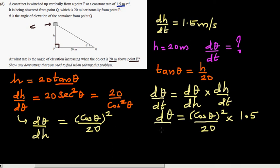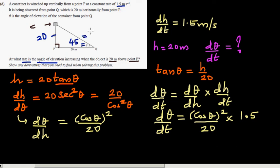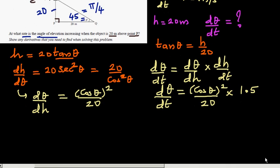The question asks: at what rate is the angle of elevation increasing when the object is 20 meters above the ground? If h is 20 and the horizontal distance is also 20, this is an isosceles right-angle triangle, so the angle has to be 45 degrees, or in radians, π/4.